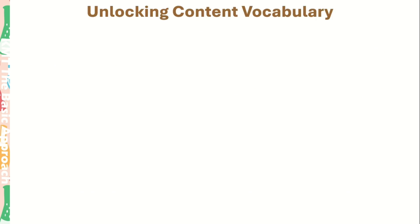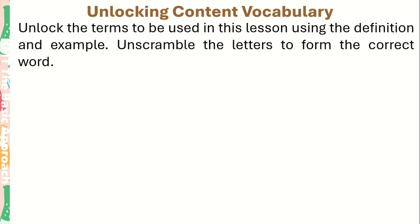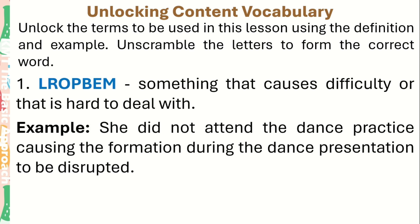Unlocking Content Vocabulary. Unlock the terms to be used in this lesson using the definition and example. Unscramble the letters to form the correct word. Let's start! Scrambled word number 1: Something that causes difficulty or that is hard to deal with. Example: she did not attend a dance practice, causing the formation during the dance presentation to be disrupted. What is the correct answer?